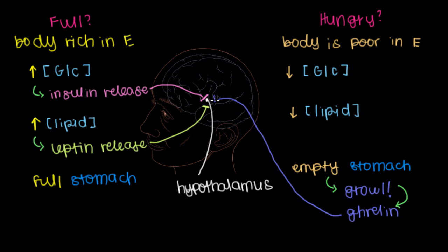And instead of a bar, I'll put a plus sign here to show that the presence of ghrelin will tell the hypothalamus that we're hungry and motivate us to find some food. These three hormones, insulin, leptin, and ghrelin, are the main players that determine whether we're hungry.